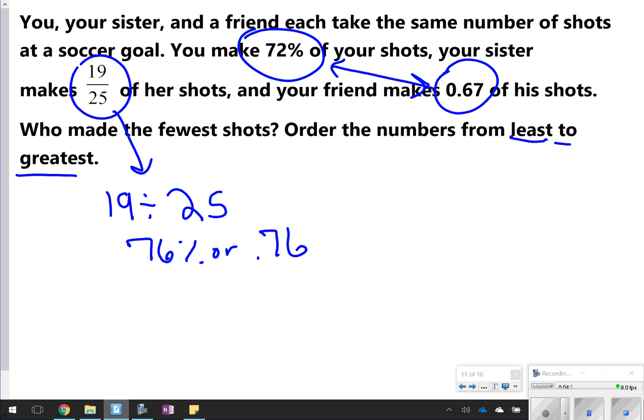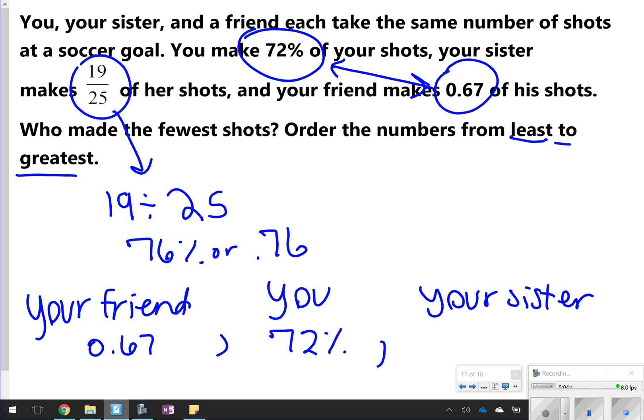Your friend would be first, with the least, which is at 0.67. Next would be you, or me, 72%, and then last would be your sister, because your sister had 76%, or 19/25. So that would be essentially how you do it. Just put them all in the same format, and then put them in order from least to greatest. Not anywhere more challenging, just takes you a little bit more time to do.